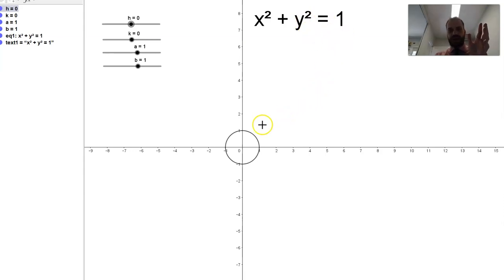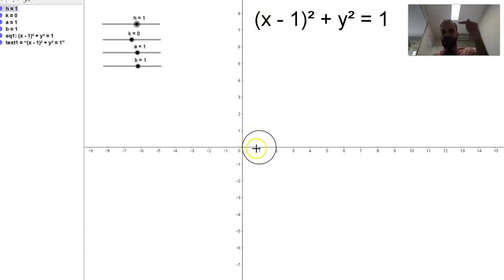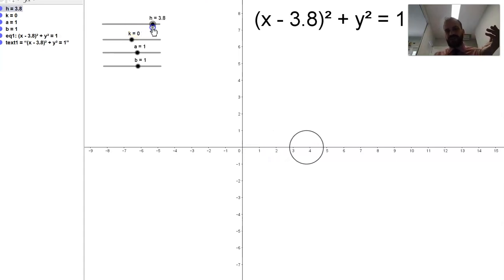Now watch what happens when I move one of these sliders. Let's start off with the h slider first. You can see when we have x minus 1 squared, that's changed the center of my circle. It's moved my circle across. Now x minus 1 moves the circle that way, and if I increase that value or decrease that value to x negative 5, you can see it's moved all the way over there, similar to how quadratics transform.